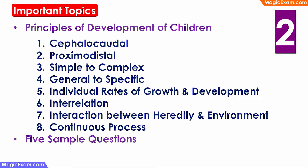Under the principles of development of children, we will cover 8 important principles because these are the most frequently asked principles in various question papers. These are: cephalocaudal, proximodistal, simple to complex, general to specific, individual rates of growth and development, interrelation, interaction between heredity and environment, and development is a continuous process. At the end, we will also solve 5 sample questions from various previous question papers so that you get an idea of what kind of questions are formed using this chapter. So let's get started.